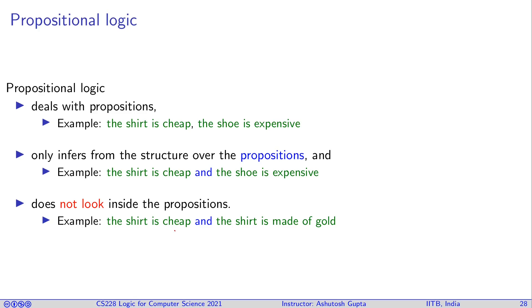It does not look inside those propositions. For example, you can say that the shirt is cheap and the shirt is made of gold. Gold and cheap you may think doesn't go together, but we don't look inside the propositions. That's why it's called propositional logic.